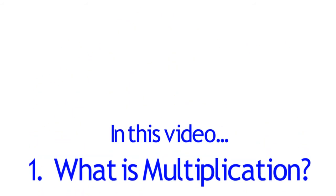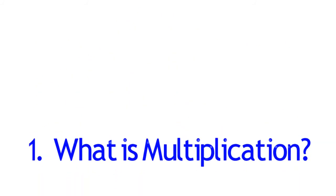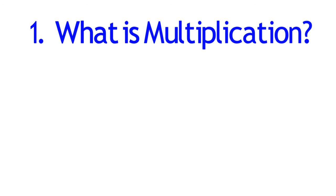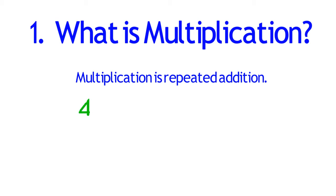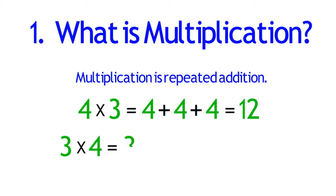So to begin, what is multiplication? When you were learning how to multiply, you probably heard the sentence, multiplication is repeated addition. So the idea of 4 times 3 means take the number 4 and add it to itself 3 times. 4 plus 4 plus 4 equals 12. And using the same idea, 3 times 4 equals 3 plus 3 plus 3 plus 3, which also equals 12. Pretty straightforward.